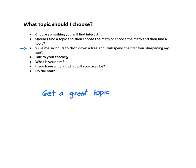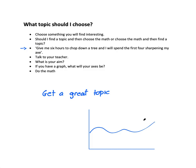Two questions I often ask my students at the beginning: one, what is your aim — think about that; and two, if you have a graph, what will your axes be? So if you think you know what you want to do, say formula one, and you're going to measure Lewis Hamilton's velocity over a given time, the x-axis is time and the y-axis is velocity — a velocity-time graph.